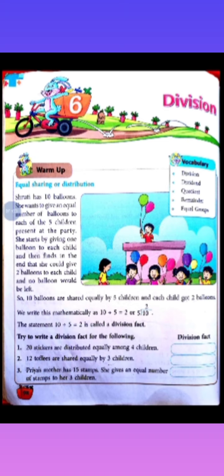division is a short way of repeated subtraction. As we have studied in the previous chapter, multiplication is repeated addition — multiplication is a short way of repeated addition. Similarly, division is repeated subtraction.